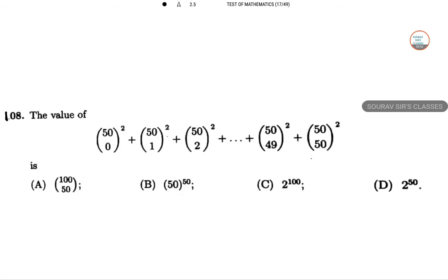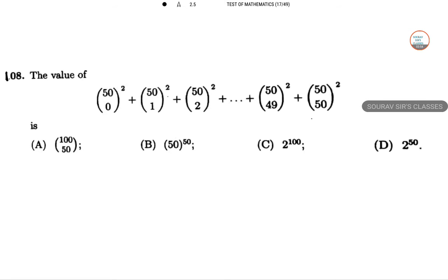The sum of 50C0 squared plus 50C1 squared and so on. Let's take the expression (1+x) to the power 50. This gives 50C0 plus 50C1 times x plus 50C2 times x² and so on up to 50C50 times x to the power 50.